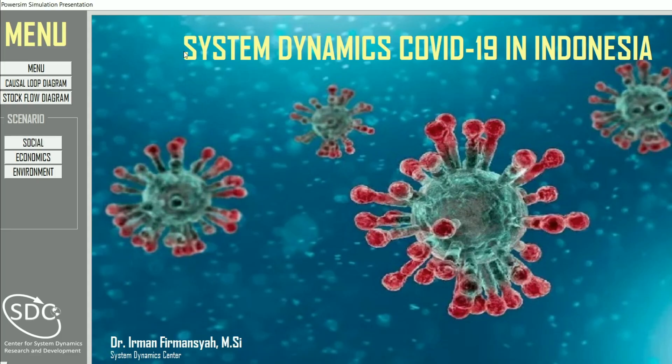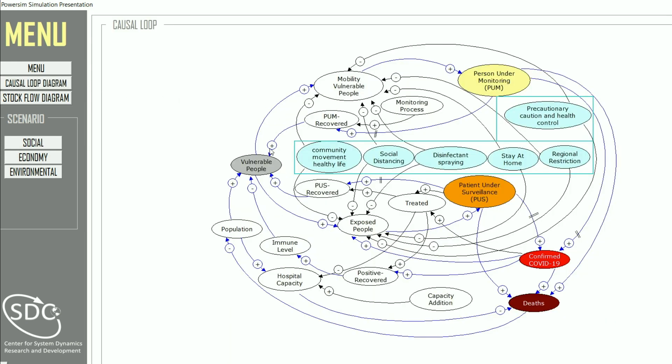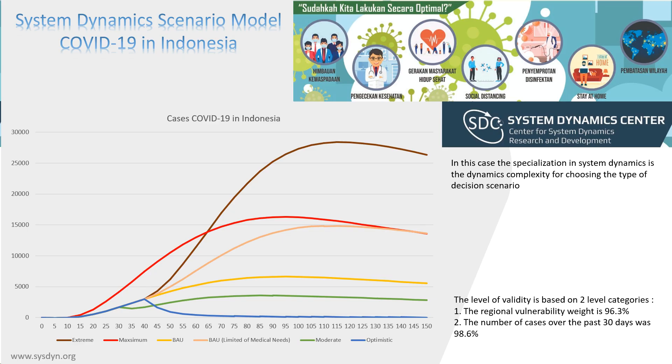We have seen together a system dynamic simulation in estimating the condition of COVID-19 in Indonesia. Therefore, we all can participate in breaking the distribution chain and minimize the cases that occur. Moreover, we have to put each best scenario by considering various aspects to resolve COVID-19 cases in Indonesia.